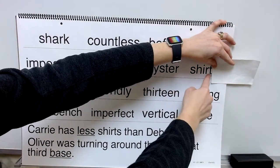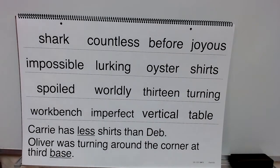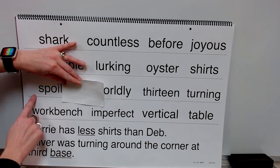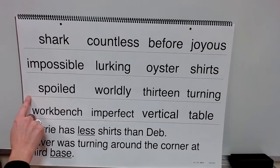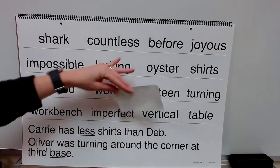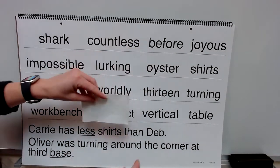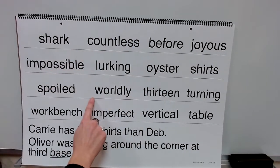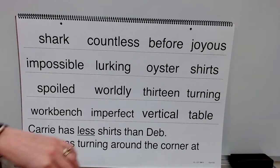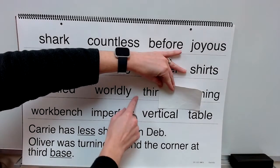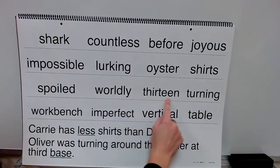Base word: shirt. Add your ending. Word: shirts. Base word: spoil. Add your ending. Word: spoiled. Base word: world. Suffix: ly. Word: worldly. Syllable: sir. Syllable: teen. Word: thirteen.